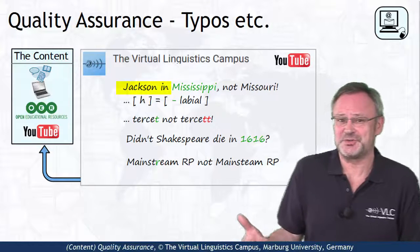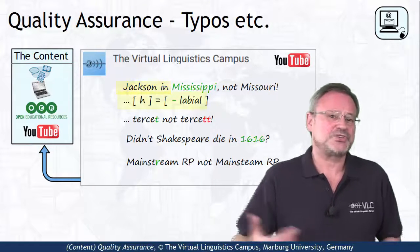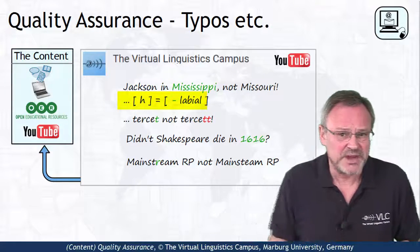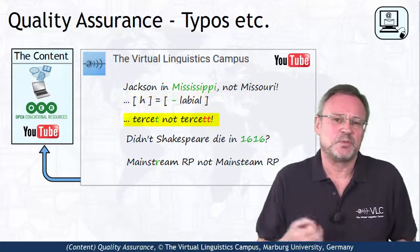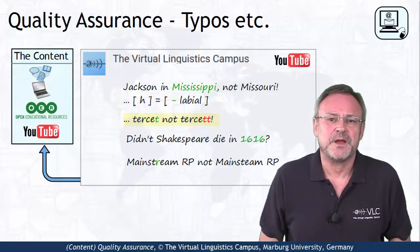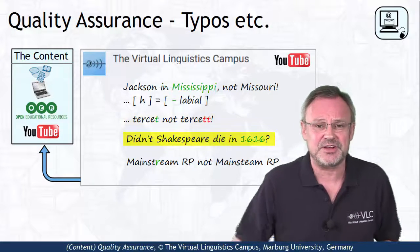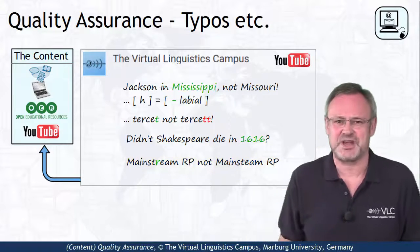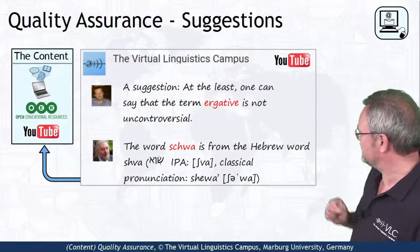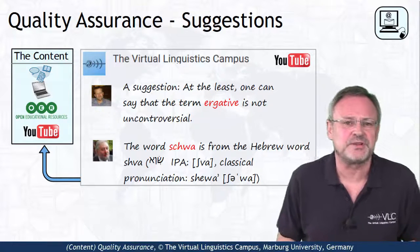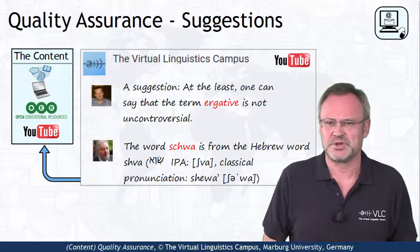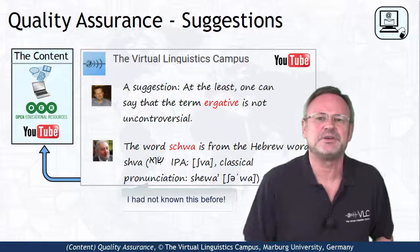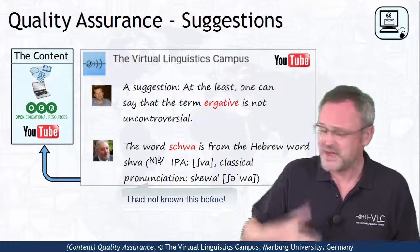I put Jackson into Missouri rather than Mississippi. I assigned the feature plus labial to glottal fricatives instead of minus labial. I misspelled terset with final double t. I wrongly said that Shakespeare died in 1618 and I misspelled further words. These things happen, they have always happened. Or look at these examples of suggestions about the content, where some viewers — shouldn't I call them reviewers now — pointed out interesting aspects concerning the respective topics. Very useful indeed.